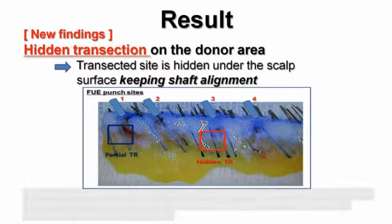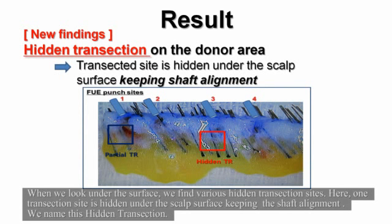When we look under the surface, we find various hidden transection sites. Here, one transection site is hidden under the scalp surface, keeping the shaft alignment. We name this a hidden transection.